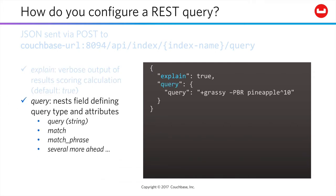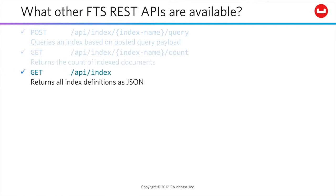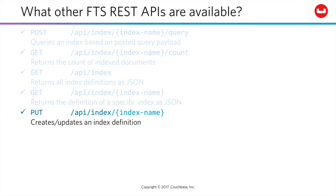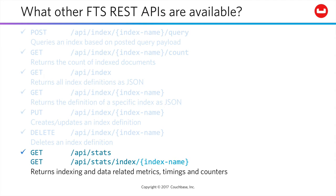You'll also see the query attribute, which encloses the payload for the query itself. As we've noted, all queries out of the UI are of the query string type. Other types that we'll see ahead include match, matchphrase, and a whole lot more. Because Couchbase emphasizes exposing all capabilities via REST API for easy integration, there's much more that you could do here than just issue queries. You can get the count of index documents, get all your index definitions, get or update a specific index definition, delete an index, and pull indexing and data-related metrics, timings, and counters. Check the documentation for more details on these and other endpoints.